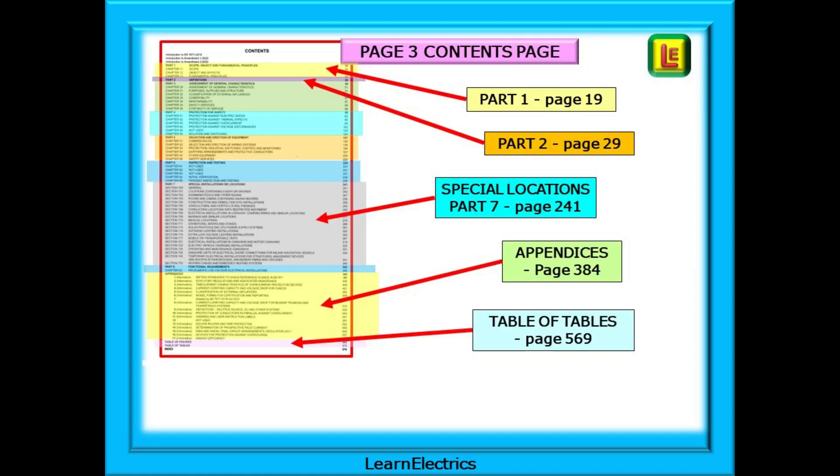Page 3 lists all the parts of the book as shown here including the page number where that part begins. It lists the main headings for each part and section and understanding this one page is an absolute essential.